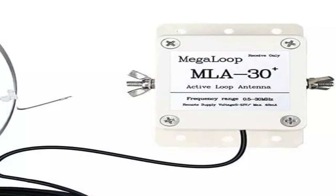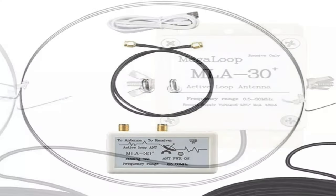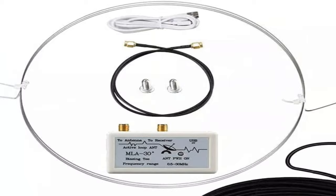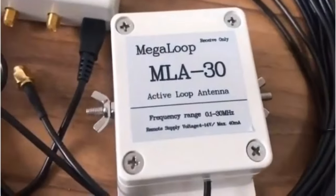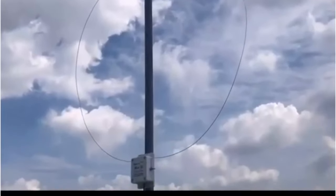The MLA30 Plus loop antenna is a wideband active receiving antenna that covers the 0.5 to 30 megahertz frequency range. This type of antenna is known for its excellent directivity, which can help reduce noise and improve signal-to-noise ratio. The MLA30 Plus also features a built-in low noise amplifier, which can further improve the antenna's performance.